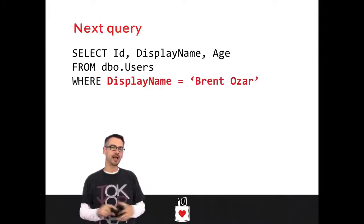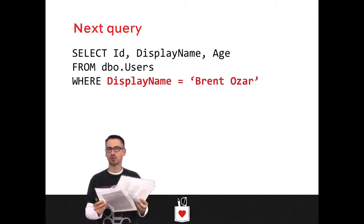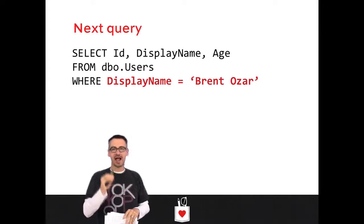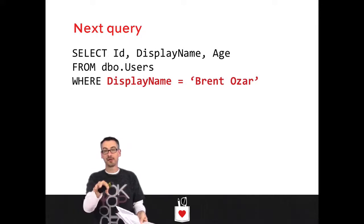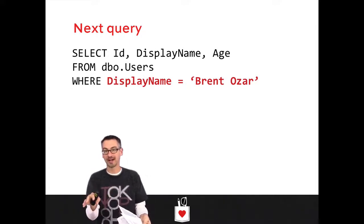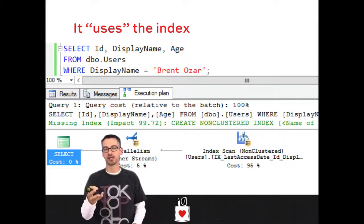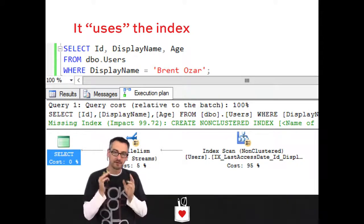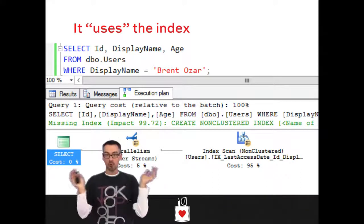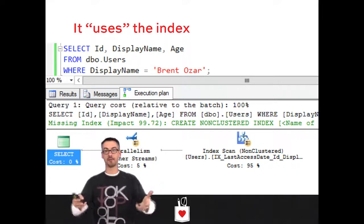Let's try another one — no functions whatsoever. Just give me the users where display name equals 'Brentozar.' Look at the indexes you have: the gray, the black, the white index. What's the narrowest index that has the fields you need? None of these indexes are sorted by display name first — some are sorted by last access date but none by display name. SQL Server will use the wide gray index because it's the narrowest copy of the table that has all the fields it needs, even though they're not sorted in the right order.